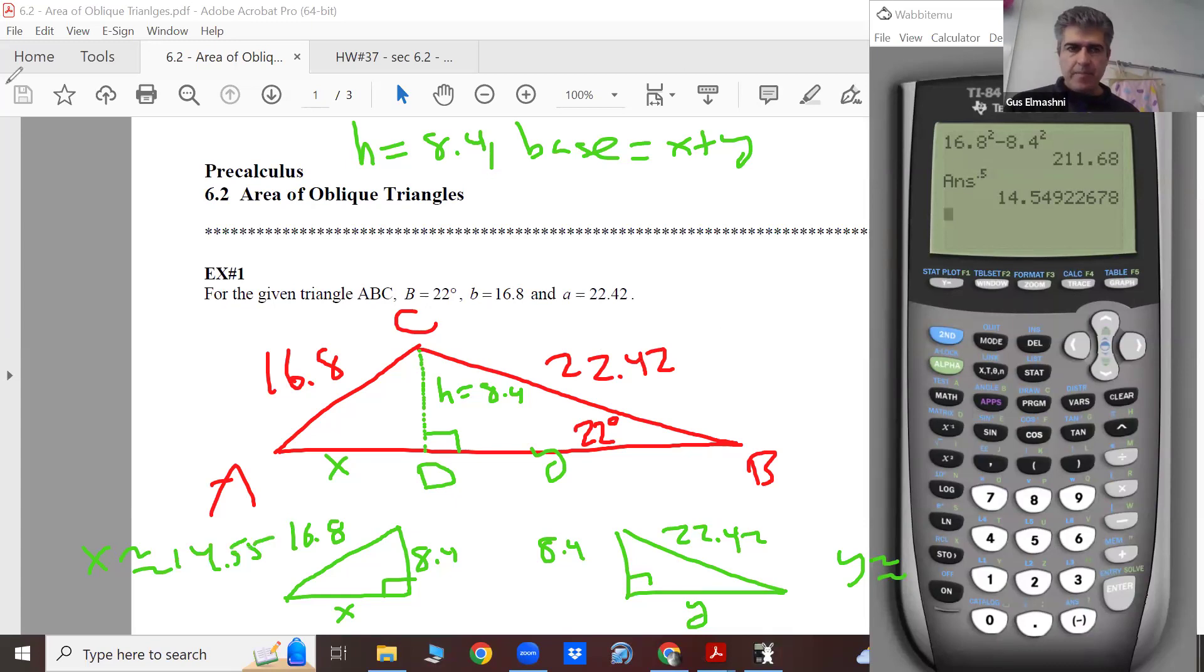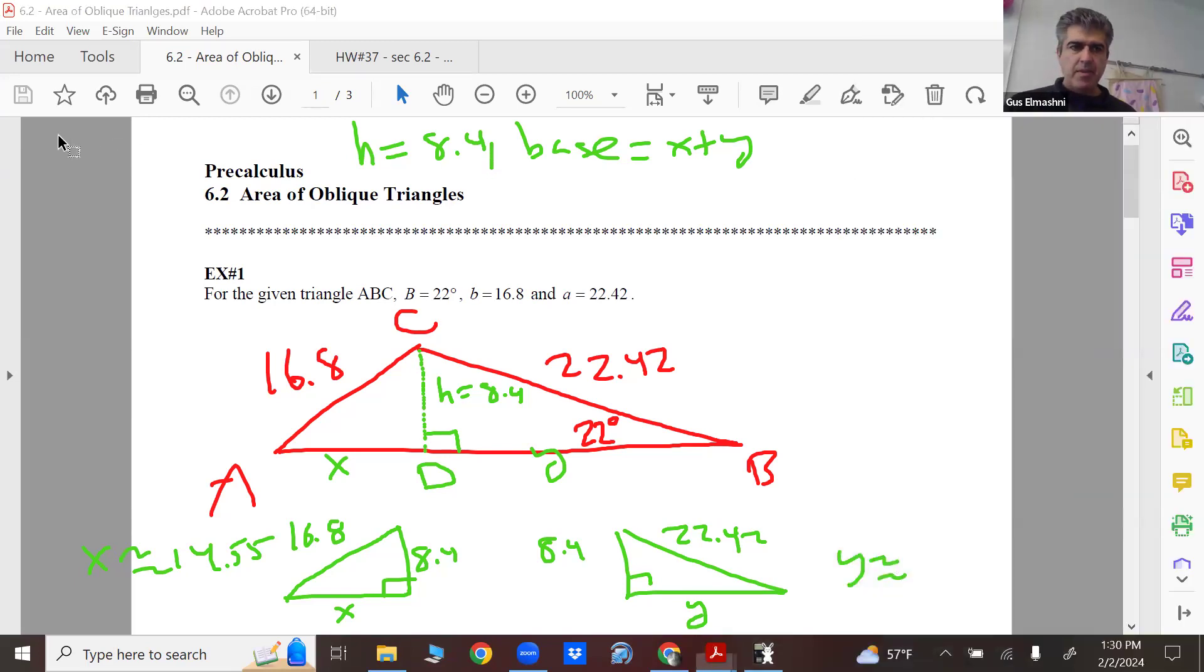And then for y, 22.42 squared minus 8.4 squared. Root it. 20.79, we'll say. 20.79. You add it up, 20.79.